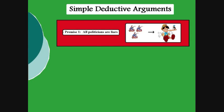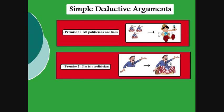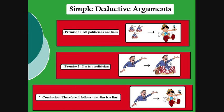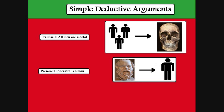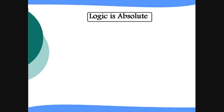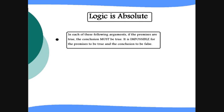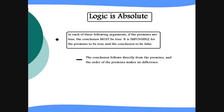Here are some rather simple valid deductive arguments. Premise 1: All politicians are liars. Premise 2: Jim is a politician. Conclusion: Therefore, it follows that Jim is a liar. Premise 1: All men are mortal. Premise 2: Socrates is a man. Conclusion: Therefore, it follows that Socrates is mortal. In each of these arguments, if the premises are true, the conclusion must also be true. It is impossible for the premises to be true and for the conclusion to be false. The conclusion follows directly from the premises, and the order of the premises makes no difference.